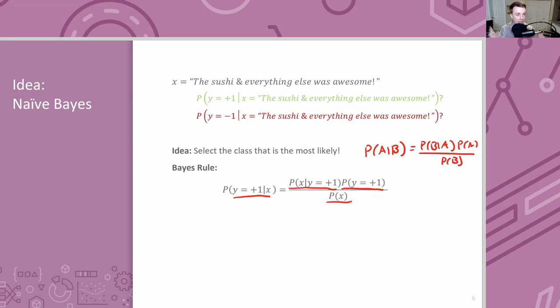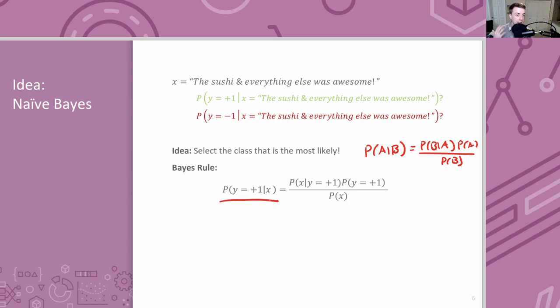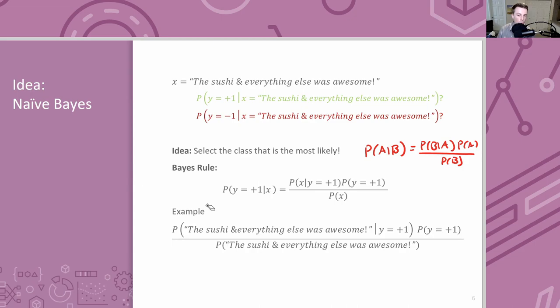We won't prove Bayes' Rule in this class — it's a mathematical theorem you might see in probability courses. We'll just use it as a formula that lets you flip conditioning. In the context of classification, Bayes' Rule says the probability of positive sentiment given your sentence equals the probability of seeing that sentence given it's positive, times the probability it's positive, divided by the probability of that sentence.